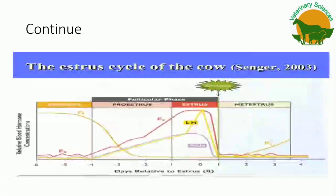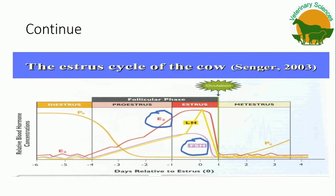Now we will see the complete hormone changes and various activities at the various stages of the estrus cycle. Starting with proestrus: follicle-stimulating hormone (FSH) from the pituitary gland stimulates the follicles to recruit. As follicle size increases, estradiol hormone increases, as it is secreted by the follicles. When estradiol reaches its peak, the animal is said to be in heat and the stage is called estrus.